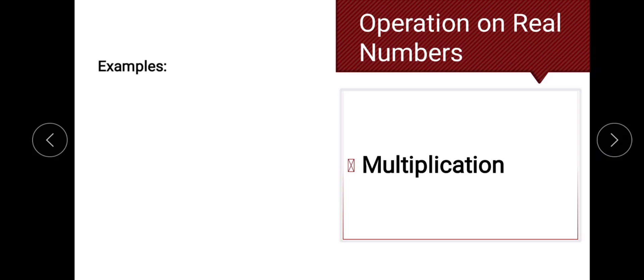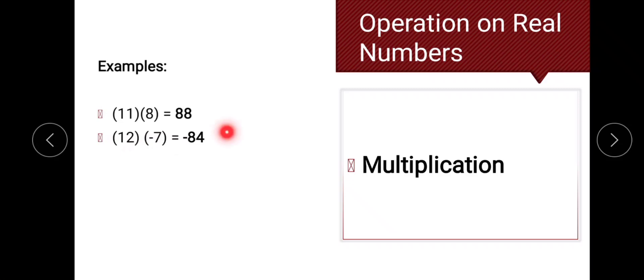In multiplying signed numbers, the product is positive if the numbers have the same sign; otherwise it's negative. For example: 11 times 8 equals 88 — positive, same signs. 12 times negative 7 equals 84 — negative, different signs. Negative 21 times 9 equals 189 — negative, different signs. Negative 5 times negative 13 equals positive 65 because both factors have the same sign.